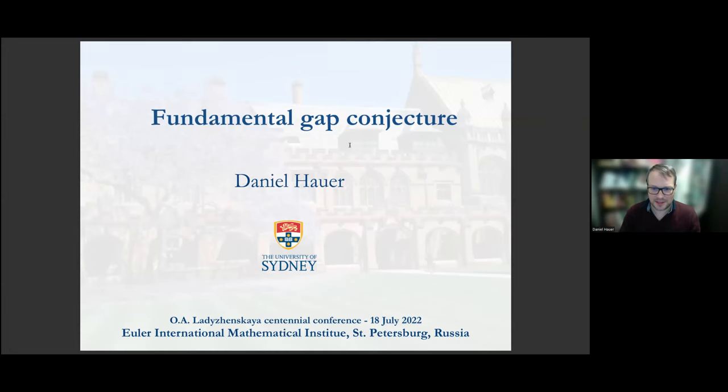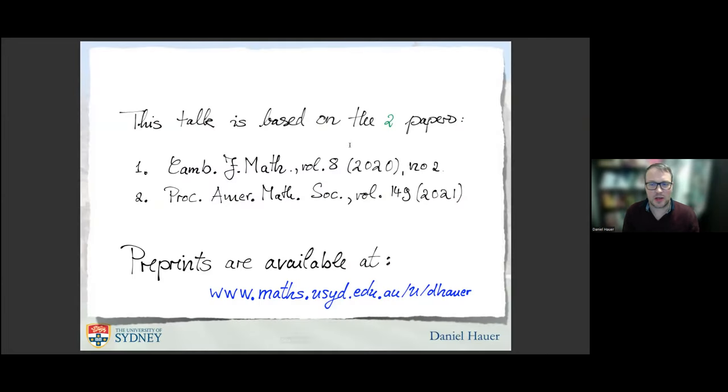The talk is based on two papers which appeared in Cambridge Journal of Mathematics and in the Proceedings of the American Mathematical Society. You can find them on the internet or on my webpage. Unfortunately, in these 20 minutes, I'm not able to show you a lot of the proofs, but I think I can give you at least a good idea and overview about the whole problem and what we achieved so far.